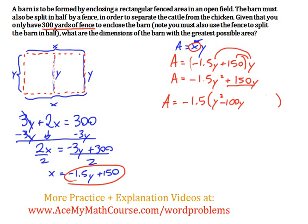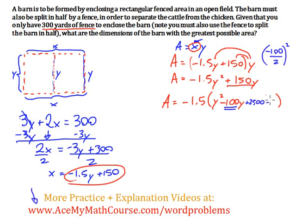So what do we do now? We want to complete the square. I'm going to take the coefficient negative 100, divide it by 2, and square it. Negative 100 divided by 2 is negative 50; squared is 2,500. I'm also going to have to subtract 2,500 since I'm adding it inside. So we have negative 1.5 times the quantity y squared minus 100y plus 2,500.